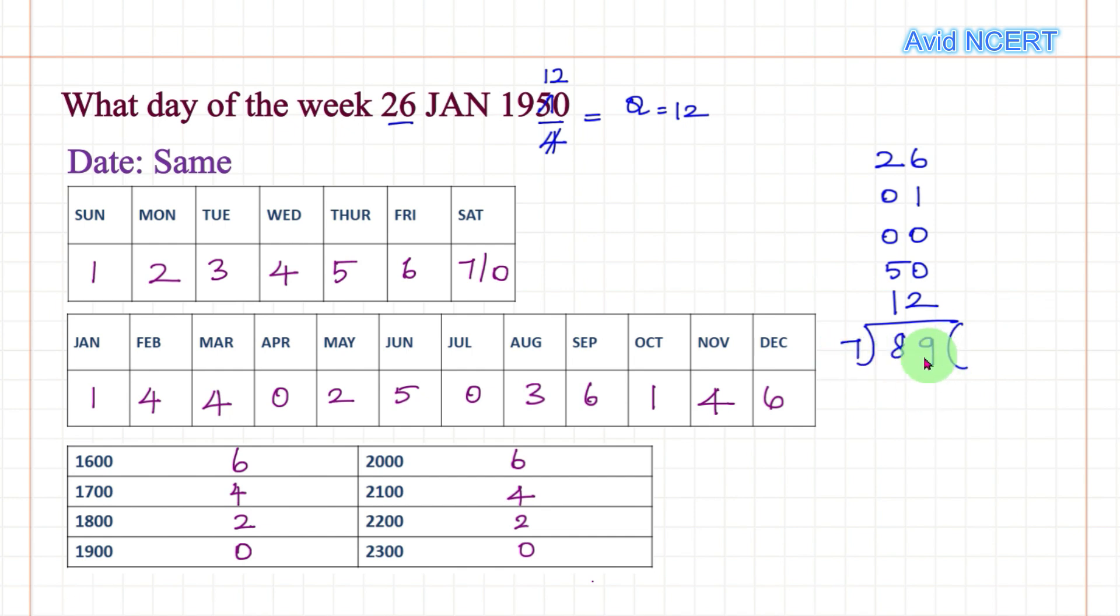7×1=7, there's a difference of 1. Bring the 9 down. 7×2=14, so there is a difference of 5. This is what we need. The remainder is 5.